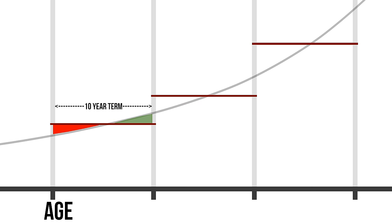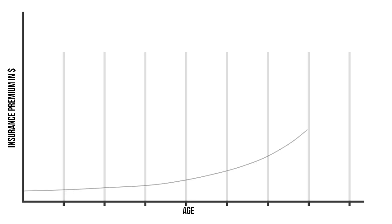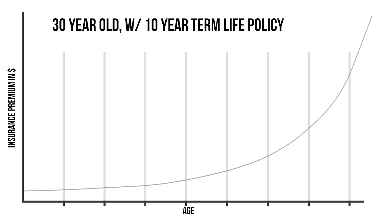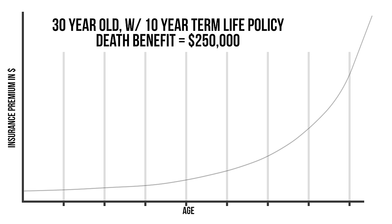Let's look at an example policy to spell this out. Let's say we had a 30-year-old with a term 10 life insurance policy with a coverage amount or death benefit of $250,000. That initial premium might be $15 per month.